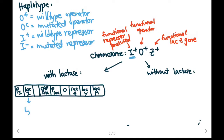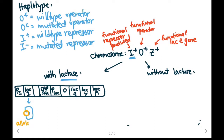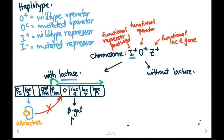With lactose, a repressor protein will be produced from our lac I gene because we have an I-plus haplotype. But because we have the presence of lactose, allolactose is going to bind to our repressor protein. This will change the shape of the protein so that it cannot bind to the operator. This means that RNA polymerase will bind to our promoter and it will be able to transcribe the three genes because it's not being blocked by the repressor protein. As a result, beta-galactosidase will be produced.